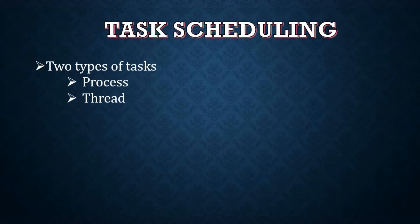When we come to task scheduling, there can be two types of tasks. One is process, another one is thread. Process is nothing but a portion of memory that contains both code and data. Whereas thread is a scheduled execution of a process. This is the basic difference between process and thread.